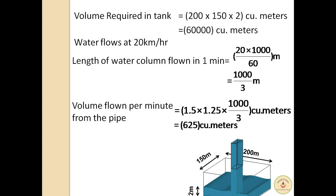This is the volume flown per minute from the pipe. Thus in 1 minute 625 cubic meters flows.